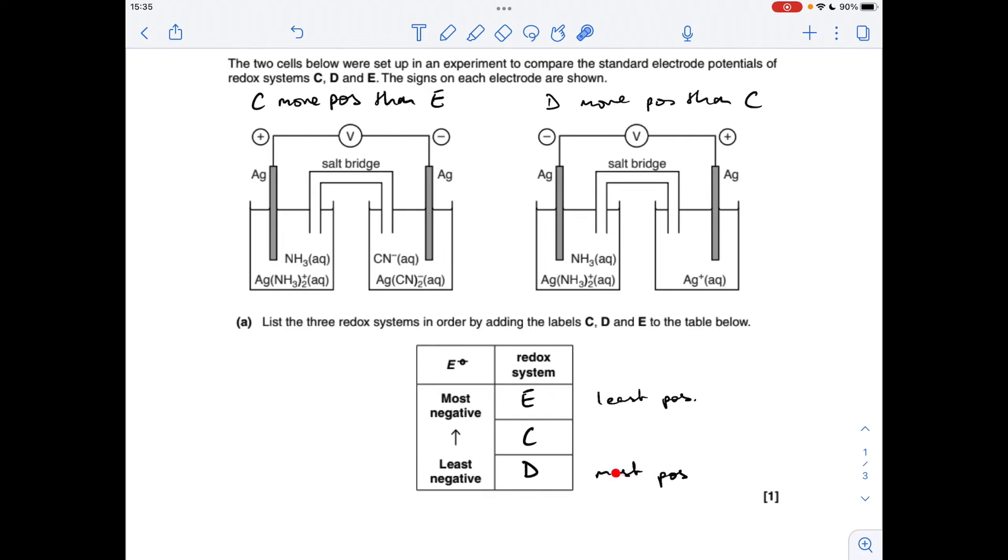So the way I've worked it out, the most positive one is D, which is obviously going to be the least negative one. The least positive is E, which is obviously the most negative one.